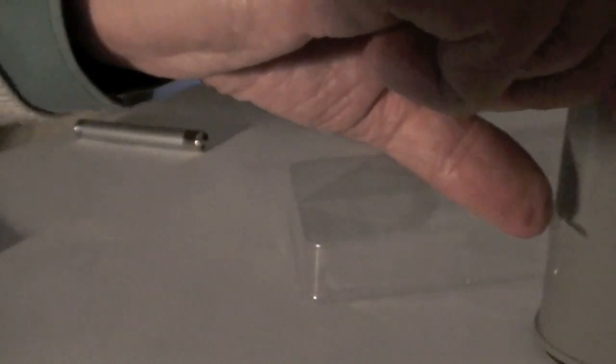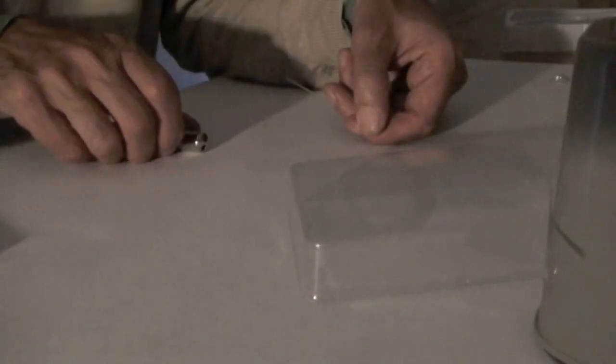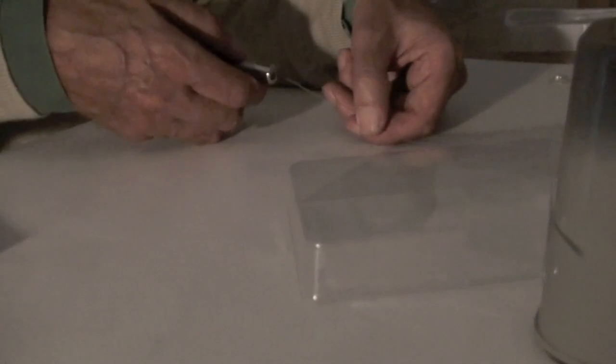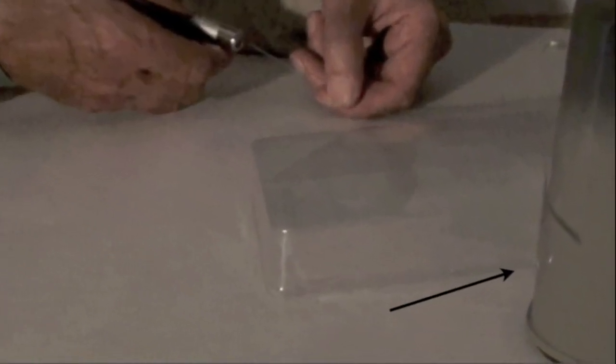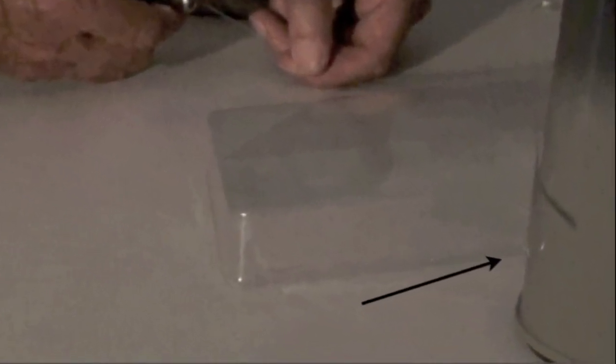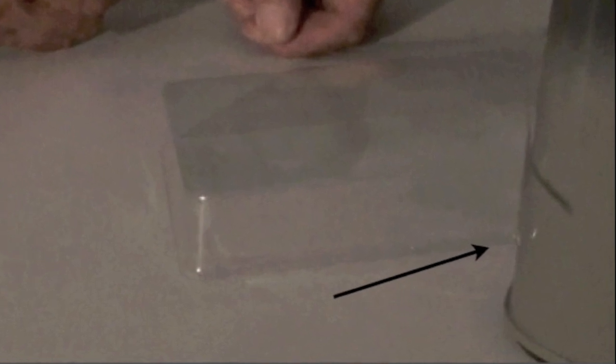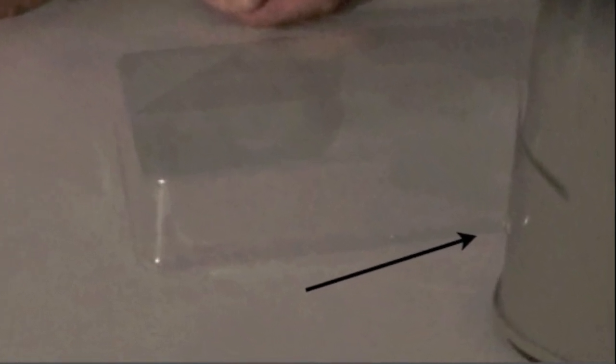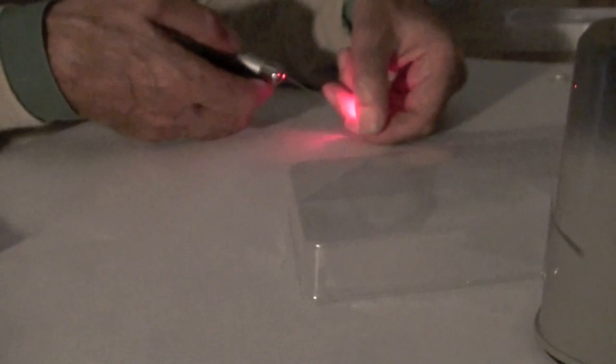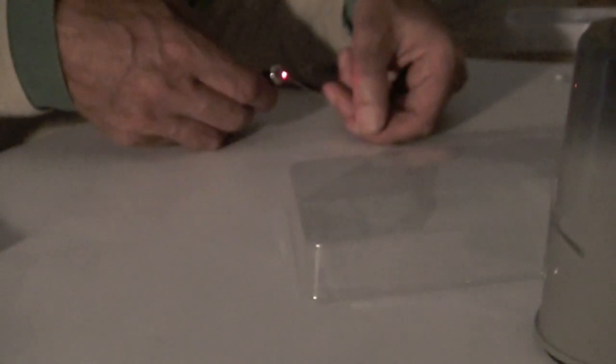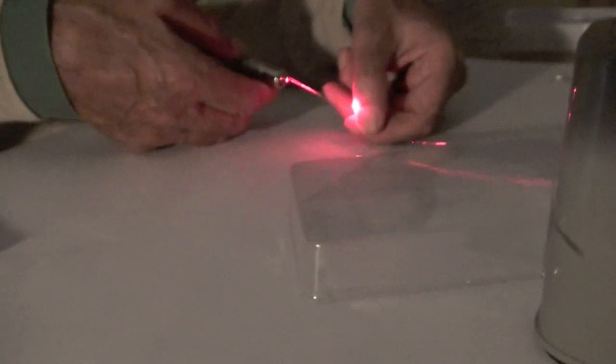If we take that fibre and bend it round so that one end is pointing towards the camera, as shown by the arrow, and then we shine a laser pen into the other end, we should be able to see, once we get it lined up, the light coming towards the camera.